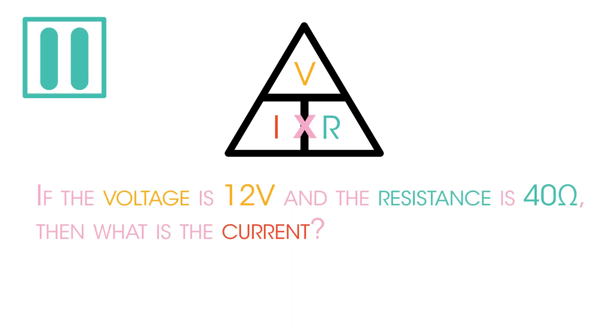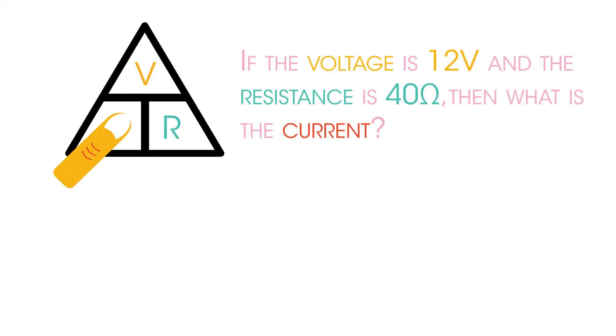Pause the video and give it a go. Did you get 0.3 amps? We're trying to find the current, so we need to rearrange the V equals IR equation to see that current is the potential difference divided by the resistance.